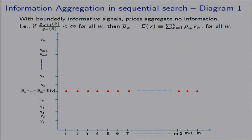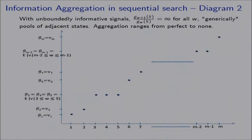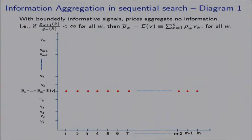The results for information aggregation in this environment are as follows. When signals are boundedly informative — even if the likelihood ratio at the top is very large — we get no information aggregation whatsoever. Prices are equal in all states, corresponding to the ex ante expected value. When signals are unboundedly informative, the typical picture shows that in some states the price fully aggregates information, while in other states prices are pooled with some adjacent states.